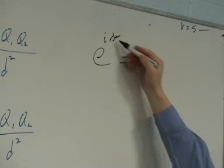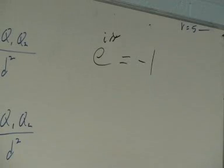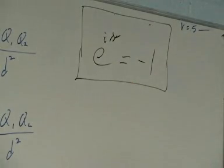E to the i pi, yeah, i is just square root of minus 1. E to the i pi equals minus 1. That's one of the freakiest equations in the universe.